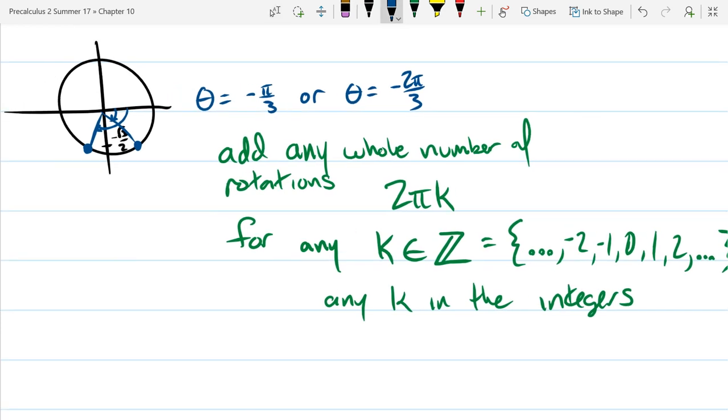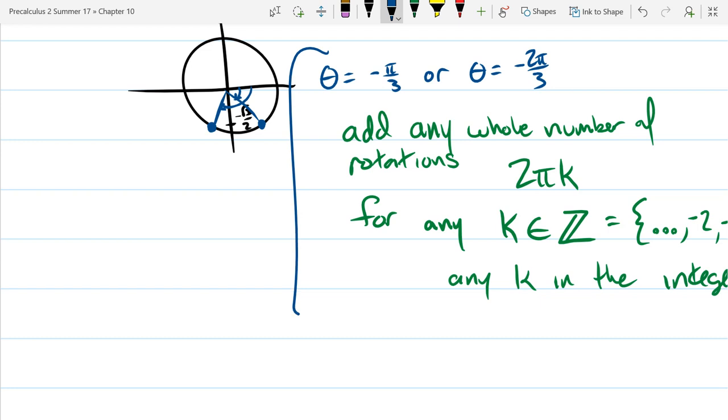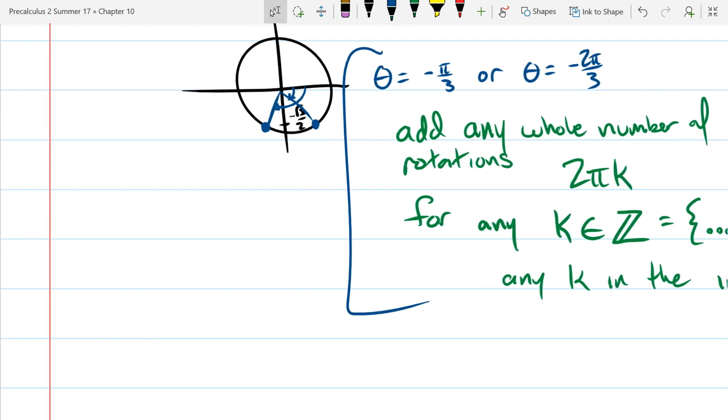So how do we write this down? So I want to include all this in one answer. So we're going to write our answer